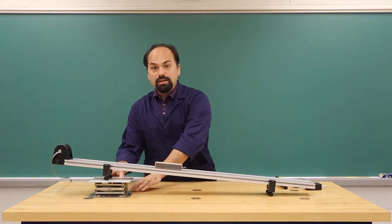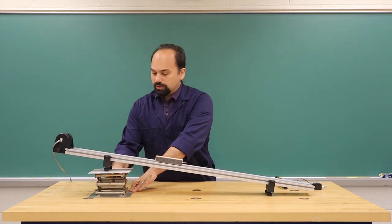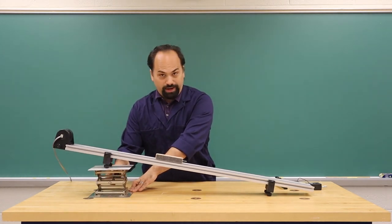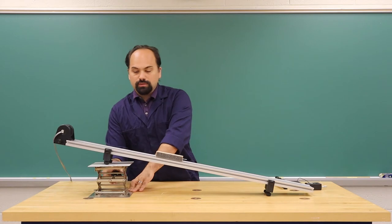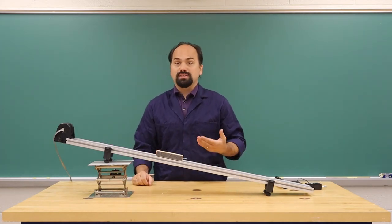As we increase the angle of the block using this lab jack, we will eventually reach some critical angle where the force of gravity pulling down the track is enough to overcome static friction.